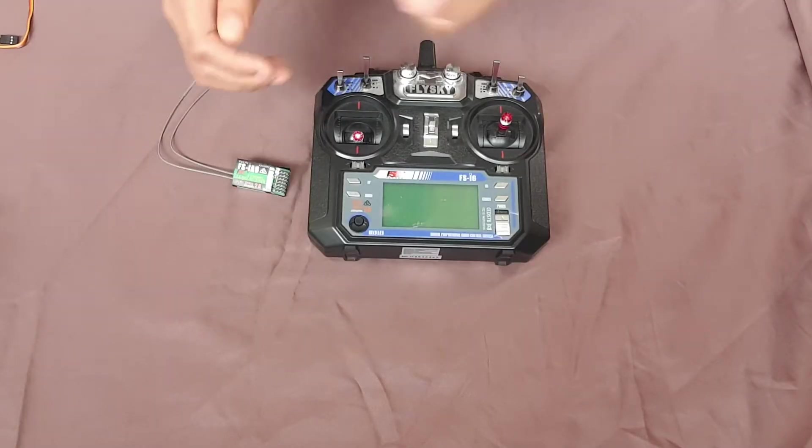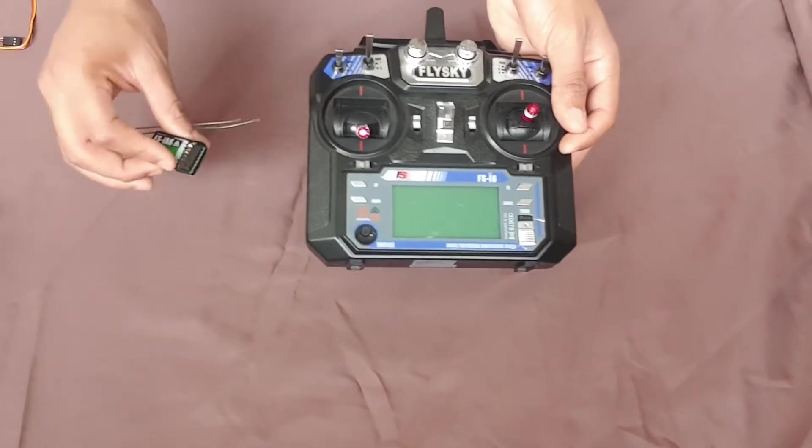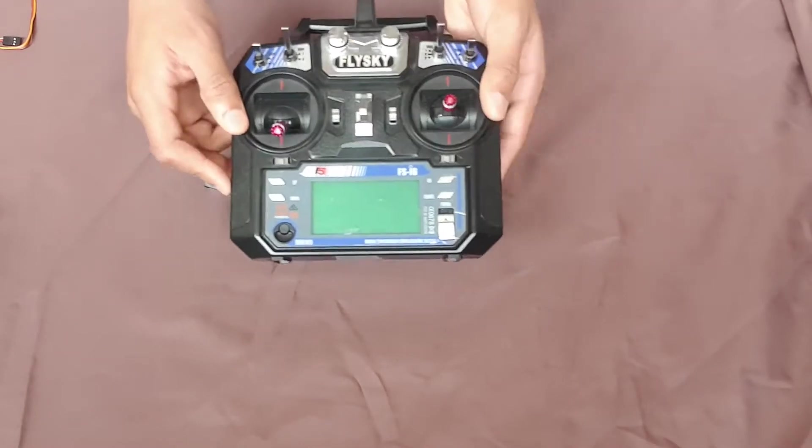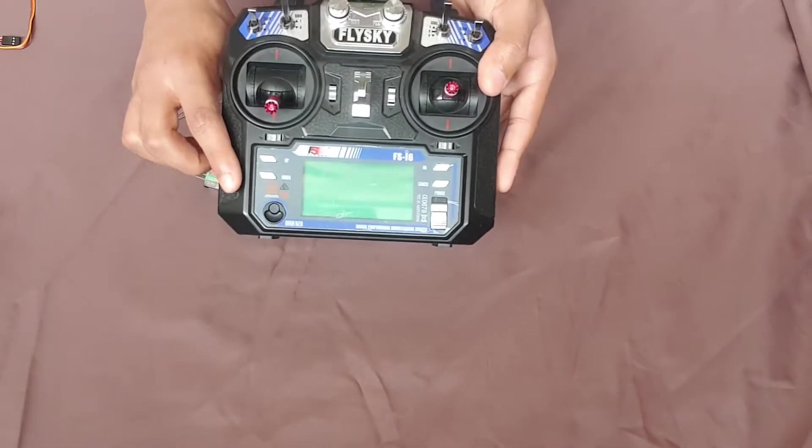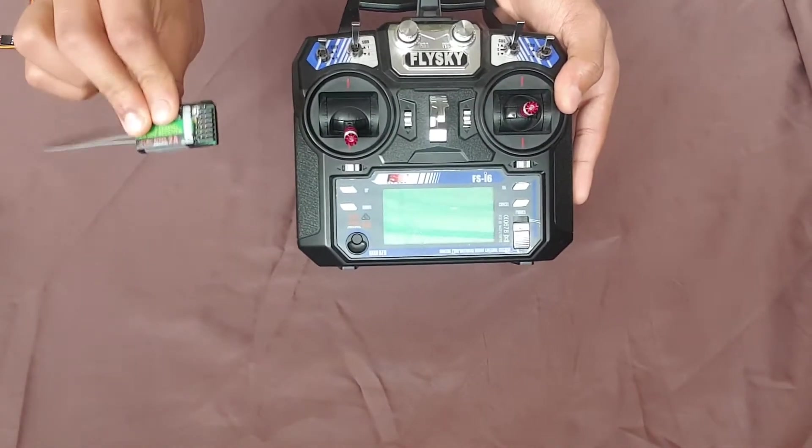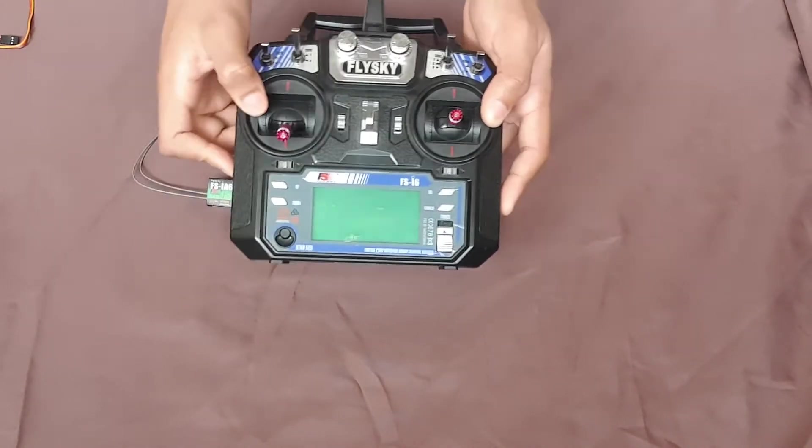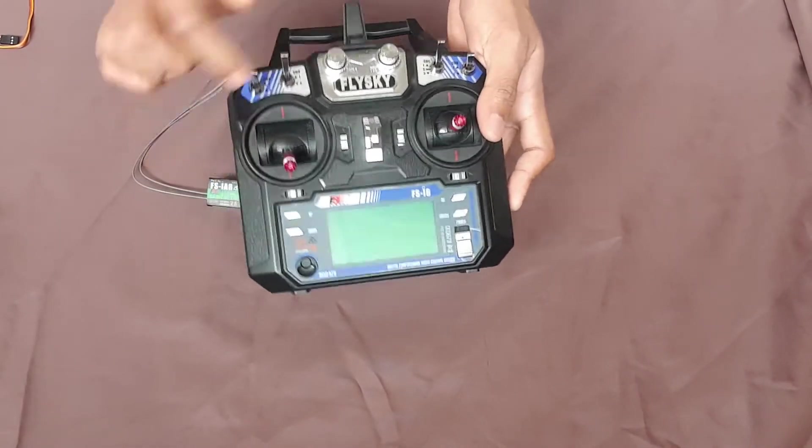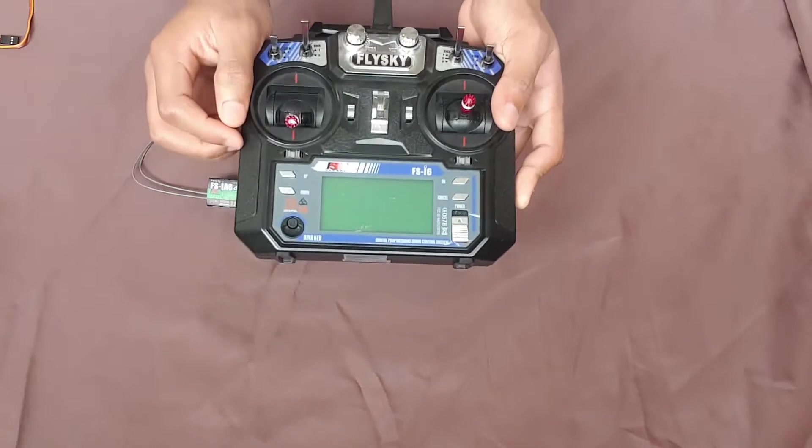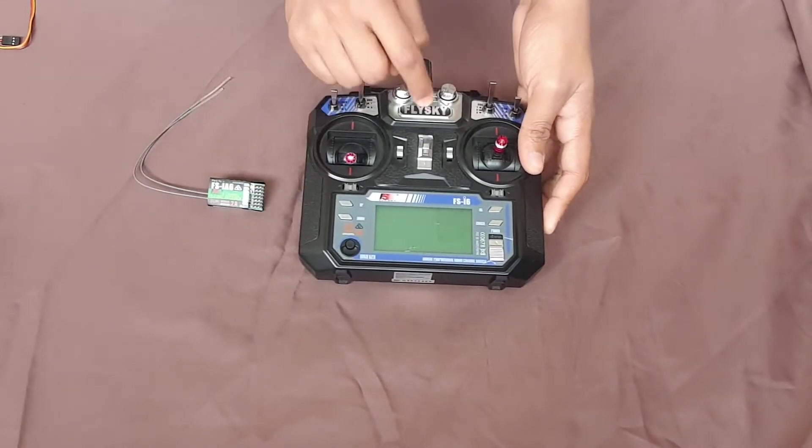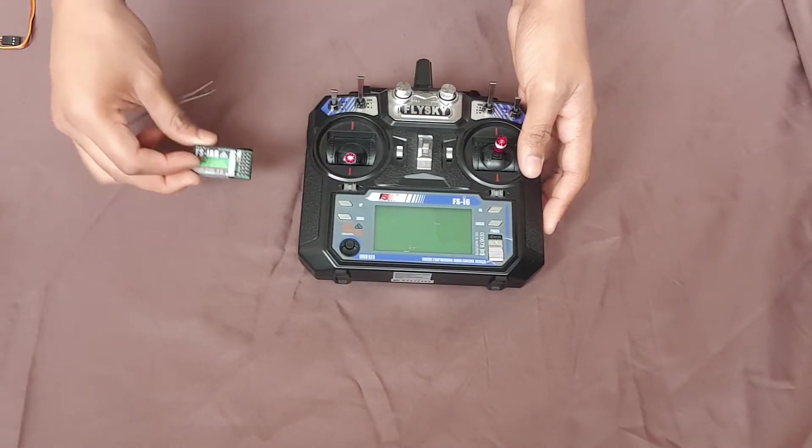Now right now, you might have a question, with what transmitter is my receiver going to bond together? Now basically, the transmitter you're gonna buy, the package is going to include the receiver it's gonna work with. And for a beginner, I'm also a beginner, Flysky tends to be a really good model so you can go for a Flysky transmitter with a Flysky receiver.